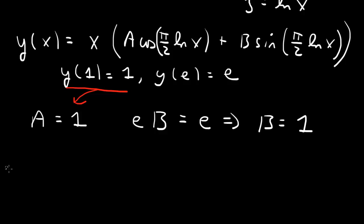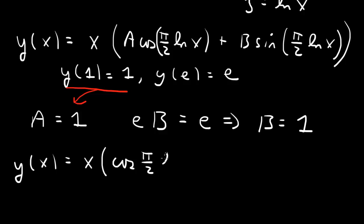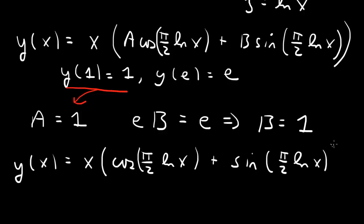Putting it all together, our final solution is y of x equals x times (cosine(pi over 2 · log x) plus sine(pi over 2 · log x)). This has very singular behavior as x goes to 0: the log goes to negative infinity, and we get a large number of oscillations accumulating as x approaches 0.